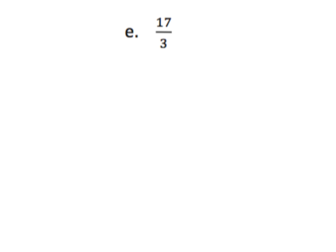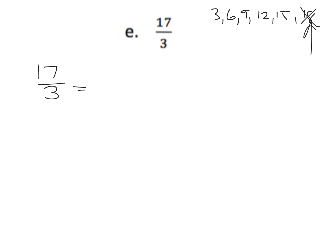Just more practice with seventeen-thirds. Let's try to follow the directions Eureka gave us — break it into two parts. Skip counting by threes: three, six, nine, twelve, fifteen, eighteen — eighteen is too high, so the best we can do is fifteen-thirds, because we don't want to go beyond seventeen. So we have fifteen-thirds plus two-thirds left over, which gives us five and two-thirds.